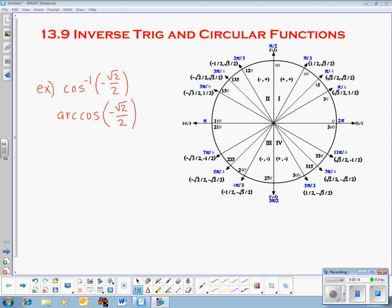So, an example of something you should learn about today is cosine to the negative 1, negative square root of 2 over 2. Just again to remind you, this does not equal 1 over cosine to negative square root of 2 over 2. Go ahead and forget that because this is negative 1 as in inverse, not negative 1 as in put me on the bottom.